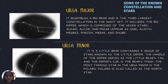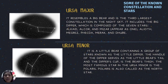Ursa Major resembles a big bear and is the third largest constellation in the night sky. It includes the Big Dipper, which is composed of seven stars: Alkaid, Alcor, Mizar, Alioth, Megrez, Phecda, Merak, and Dubhe. Ursa Minor is a little bear containing a group of stars known as the Little Dipper.